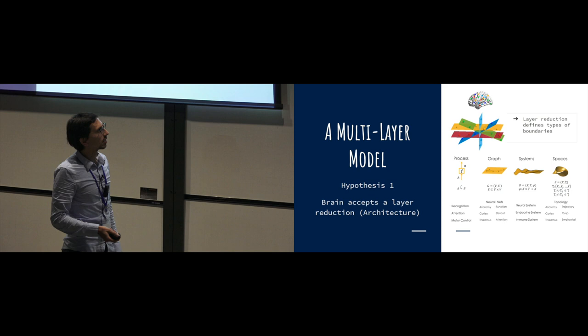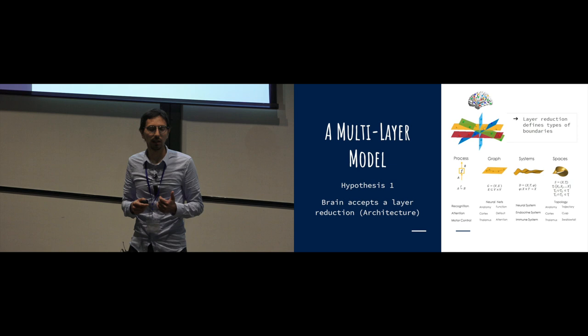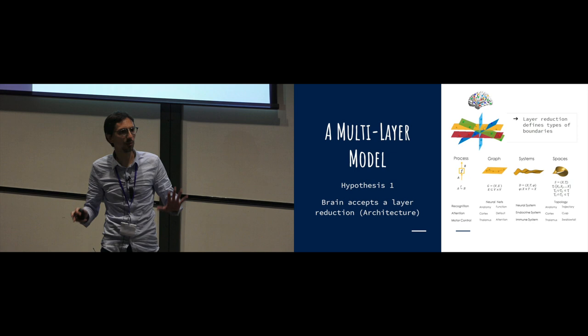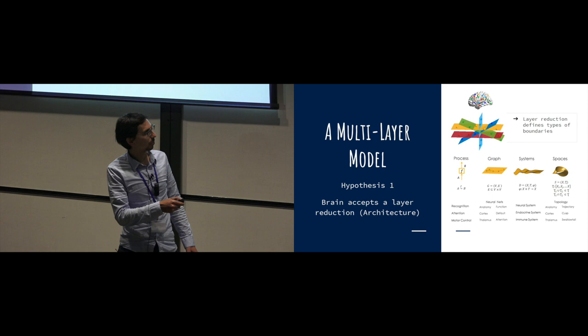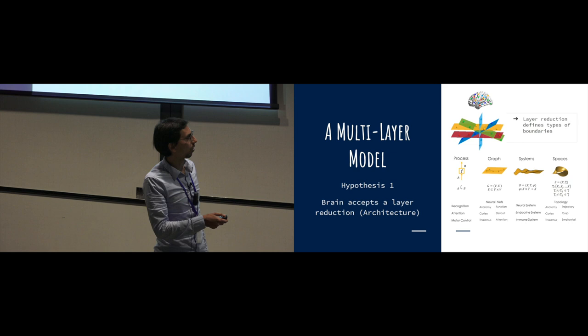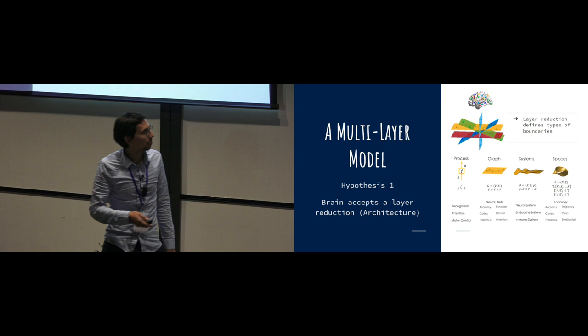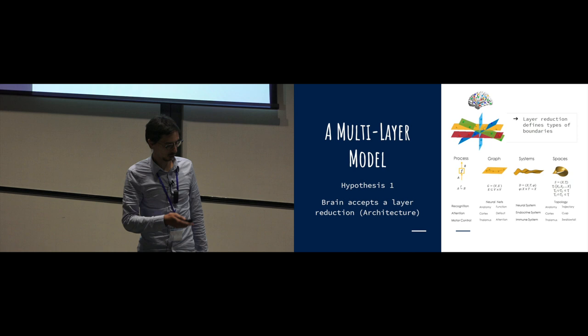The first hypothesis is that you can divide the brain and the body into different systems. These different systems can be described with any mathematical theory that you would like. For example, here you can describe these layers with process theories, as we saw in Sean's talk, but you can also describe them like networks, like dynamic systems, or like topological spaces. Of course, you will define them differently in all these different forms.